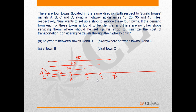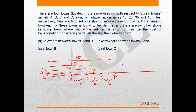Where should he set up the shop to minimize the cost of transportation, considering he travels through the highway only? If the shop is somewhere between A and D, this distance is 10, this distance is 15, and this distance is 10 — so by symmetry it should be exactly between B and C to minimize distances traveled. Let's call this point P, so PB plus PA and PC plus PD should be minimum.